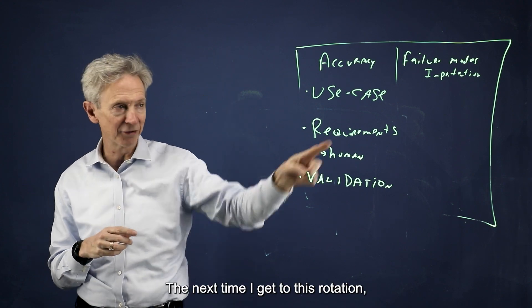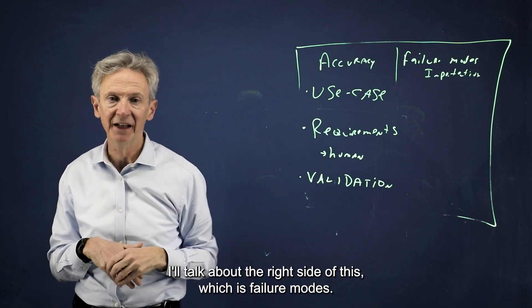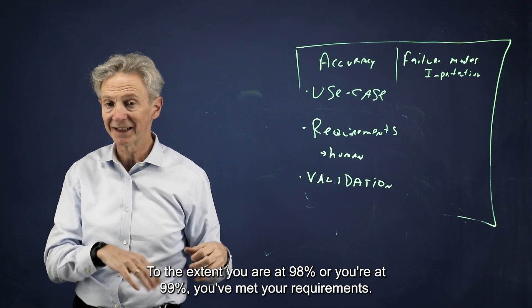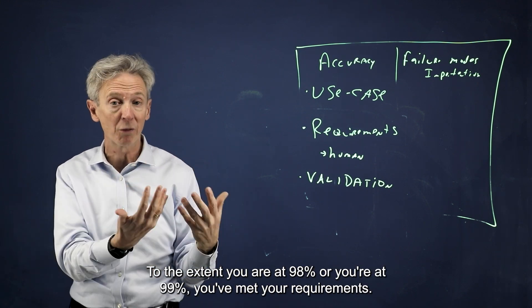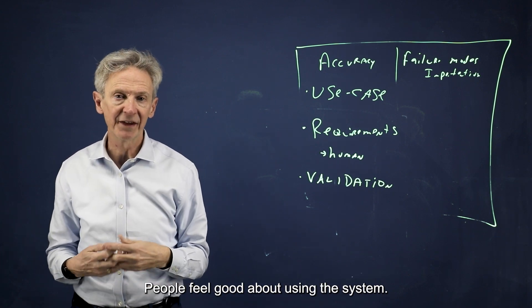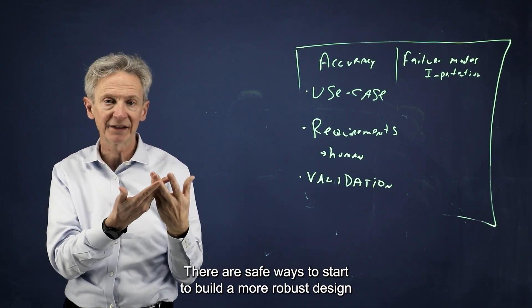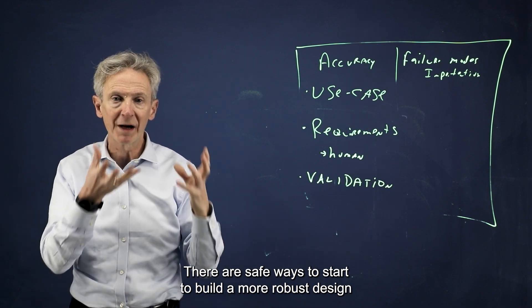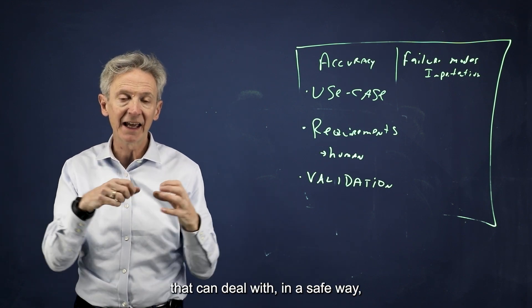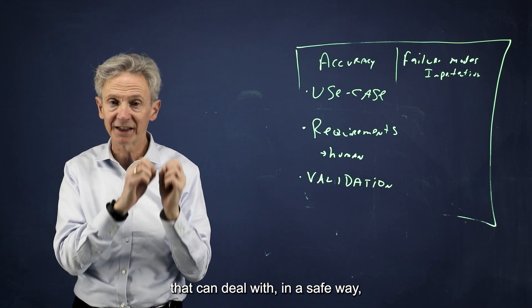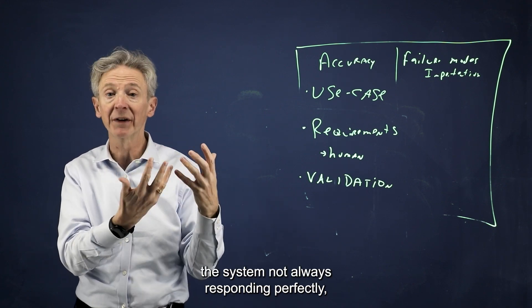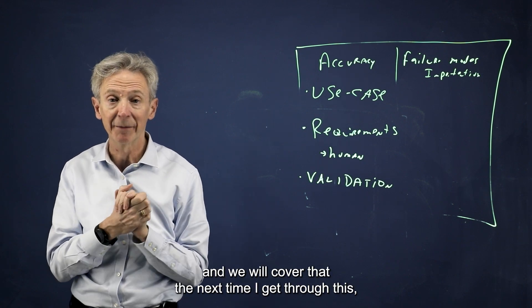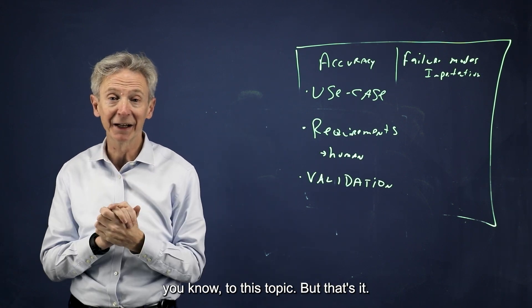The next time I get to this rotation, I'll talk about the right side of this, which is failure modes. To the extent you're at 98% or 99%, you've met your requirements, people feel good about using the system, there are safe ways to build a more robust design that can deal, in a safe way, with the system not always responding perfectly. And we will cover that the next time I get to this topic.